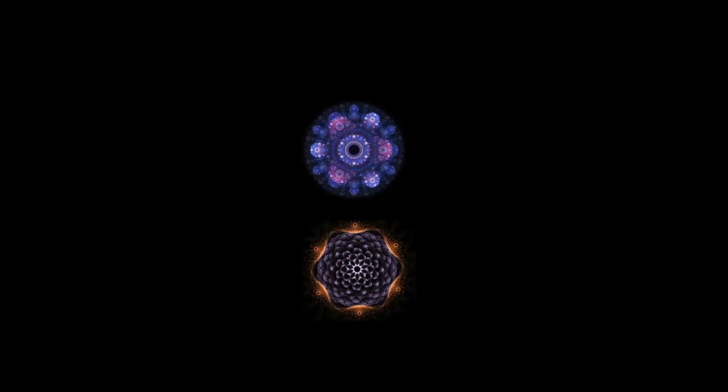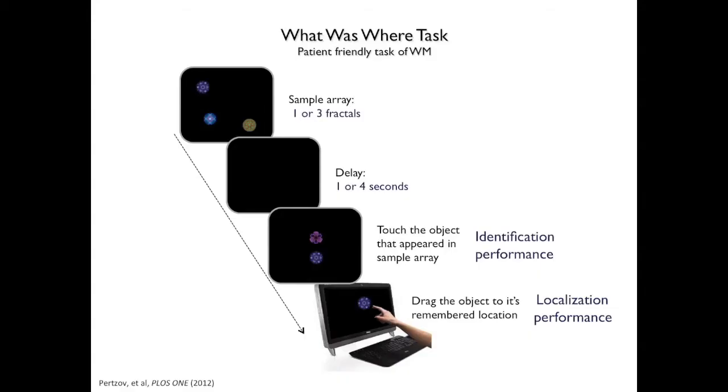The items go away, followed by a few seconds — sometimes up to four seconds — of delay. Then afterwards, two fractals or objects appear in the center of the screen. Participants have to pick the item that they held in memory, and then importantly they have to drag it to the location that they remembered it to be. In summary, participants see one or three items, keep them in mind for a few seconds, then first pick the item they remembered.